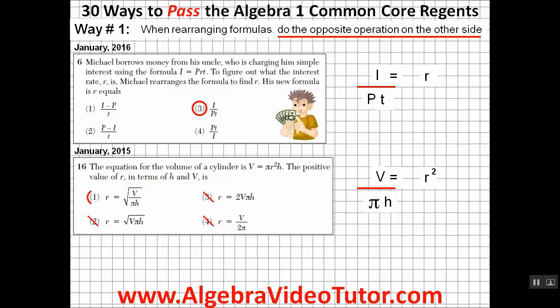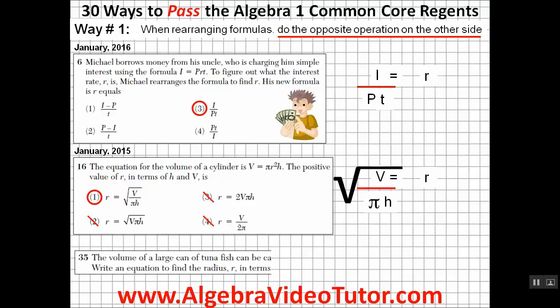The answer will be choice one, because in order to get rid of the square, you need to take the square root of the whole formula on the other side, which is the opposite operation.